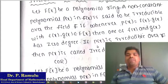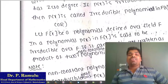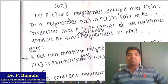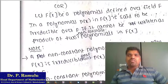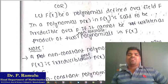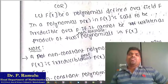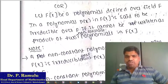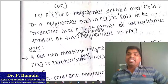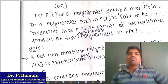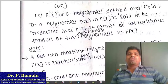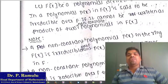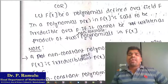If P(x) is irreducible over F, then P(x) is called an irreducible polynomial in F[x]. Defined over the field F in a polynomial ring, P(x) in F[x] is said to be irreducible over F if it cannot be written as a product of two non-constant polynomials. This is analogous to a prime number.